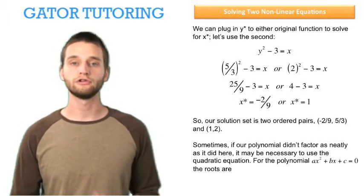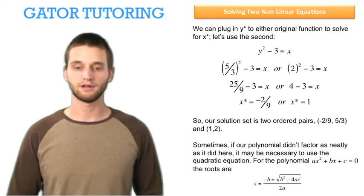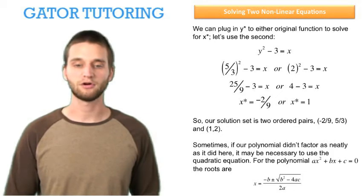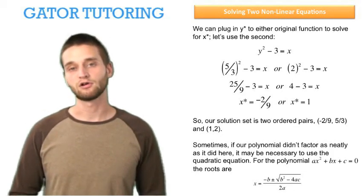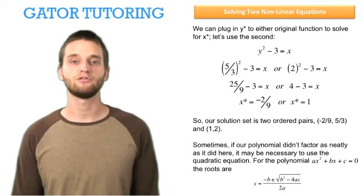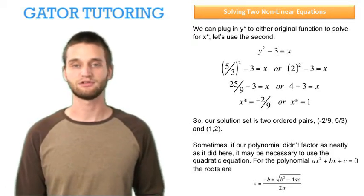are the opposite of b plus or minus the square root of b squared minus 4ac all over 2a. This is again what we call the quadratic formula, and you would have to use this if we weren't able to factor the polynomial like we were able to in our example.